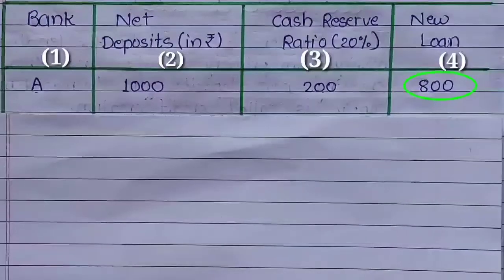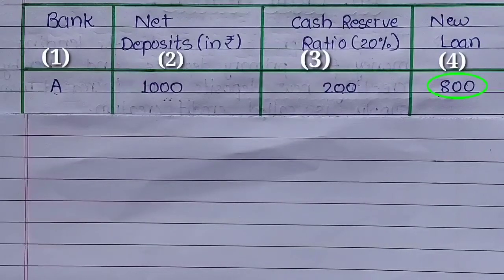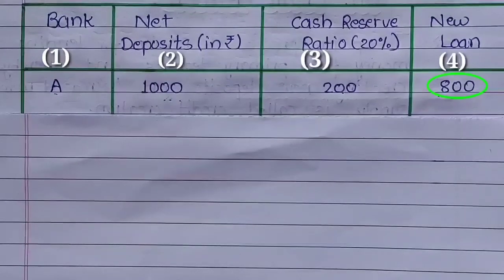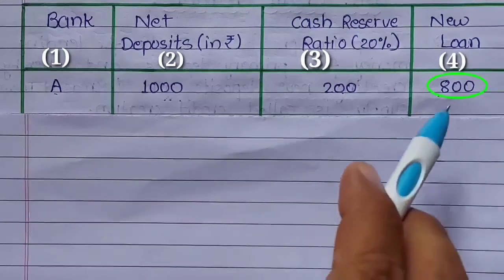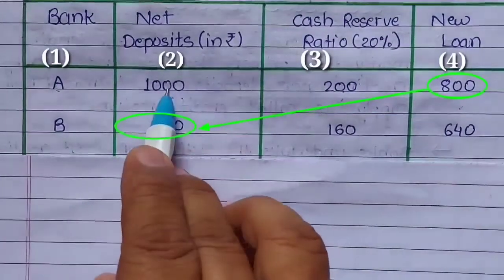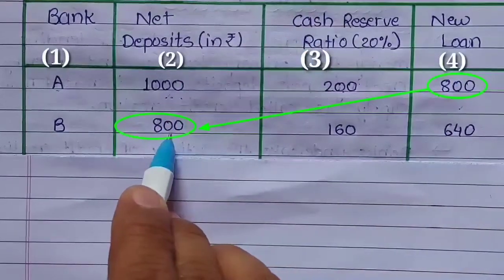अब ये 800 रुपए market में आ चुके हैं. जिसने 800 रुपए की loan ली होगी वो इन पैसों को कहीं खर्च करेगा, और हमारे assumption के अनुसार सारे economic activities bank के through होती हैं, तो वो bank के through ही payment देगा — यानि जिस किसी को वो payment देगा वो इस 800 रुपए को उसके bank account में जमा कराएगा. तो ये 800 रुपए फिर से bank के पास वापस आ जाते हैं — वही 1000 रुपए में से 200 reserve रखकर जो 800 loan दी थी, वो घूम फिरकर फिर से bank के पास एक नई deposit के रूप में आ गई.